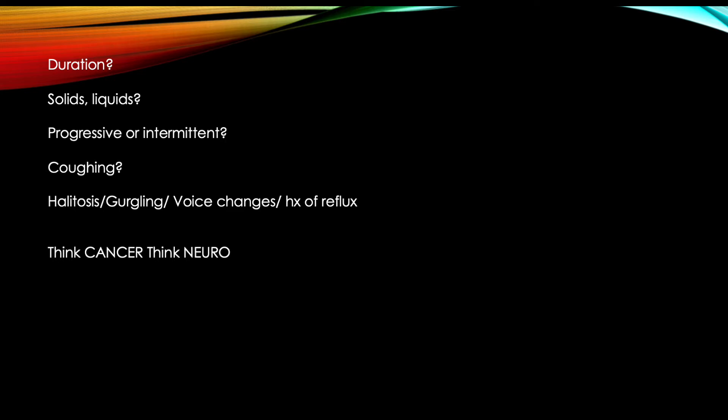Progressive versus intermittent is another important distinction. If something is compressing the esophagus, it won't present intermittently — it's there yesterday, two weeks ago, three weeks ago, it's not going to come and go. Something intermittent suggests a motility disorder. So if Anita tells us the duration is weeks, it's affecting solids, and it's progressive, that's already ringing alarm bells.